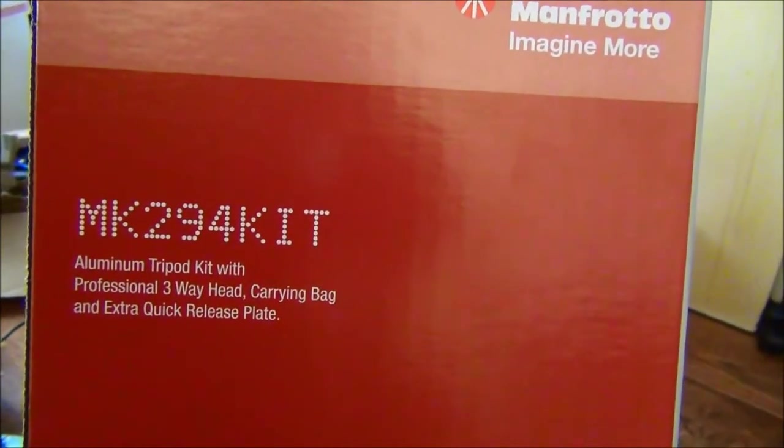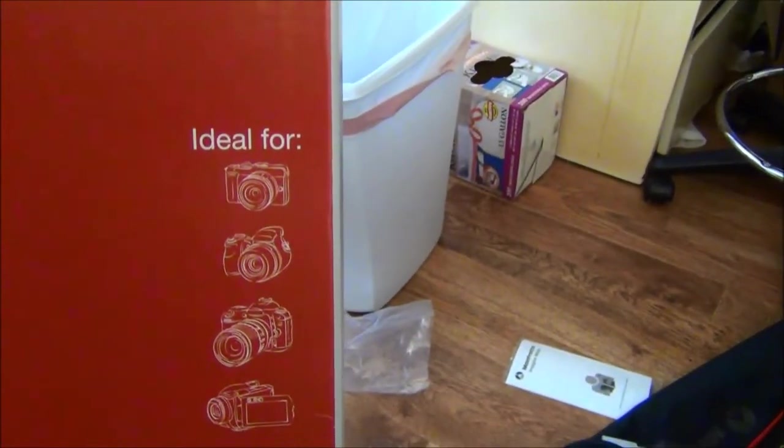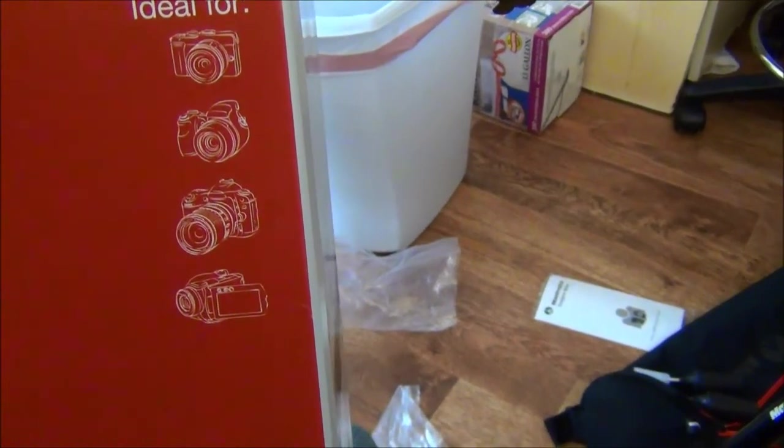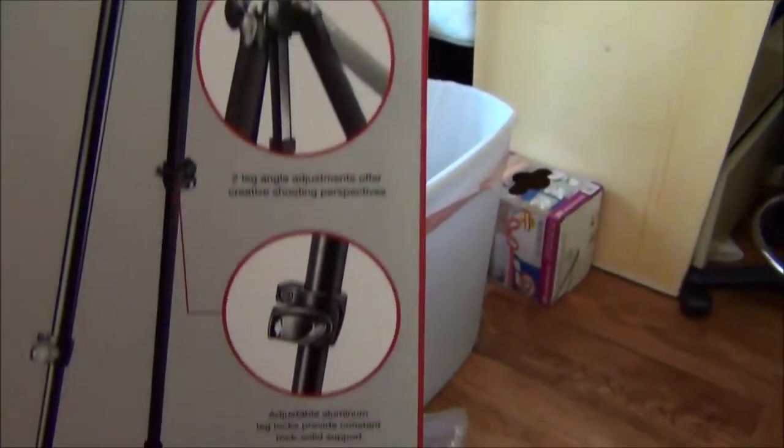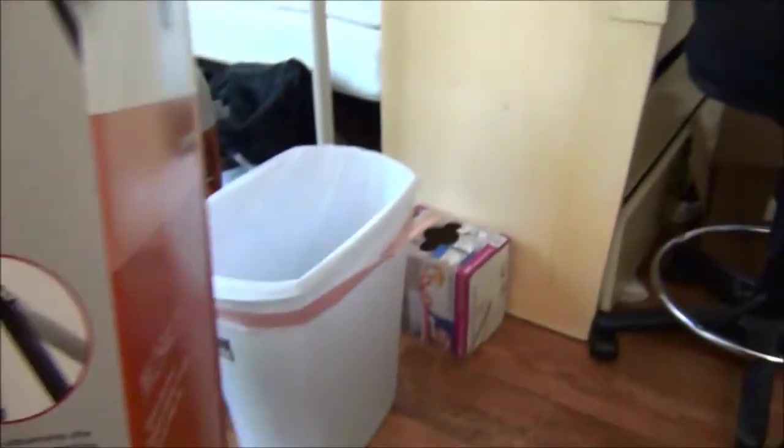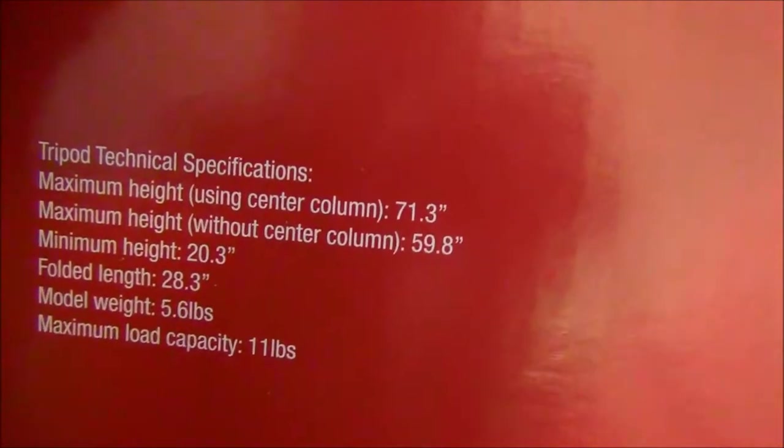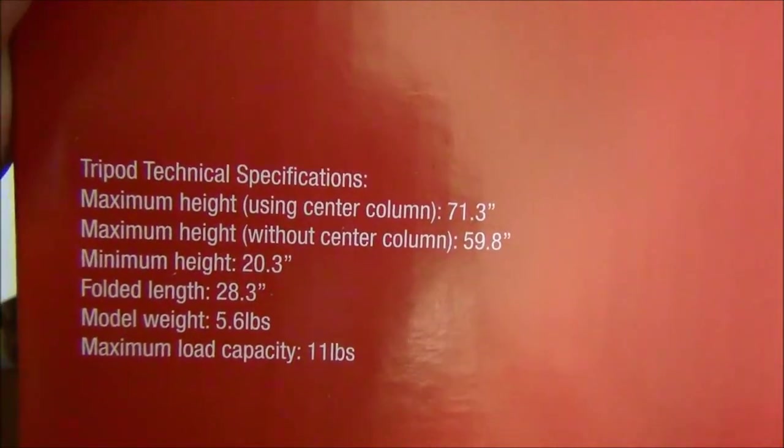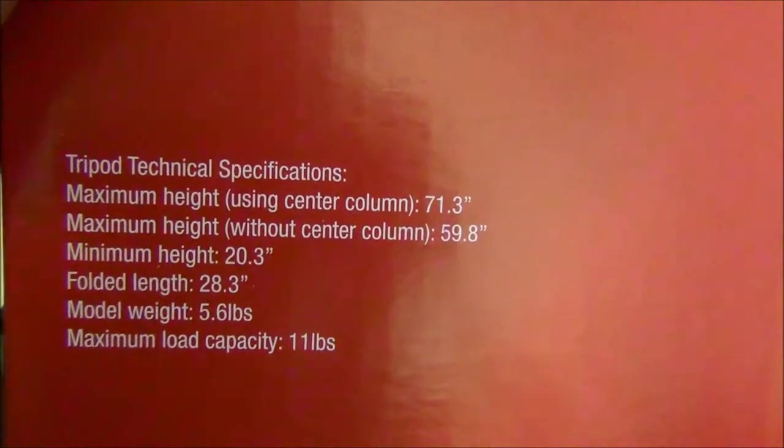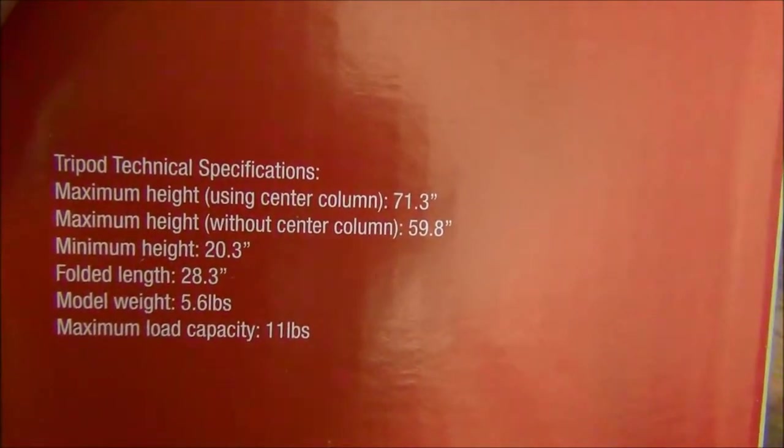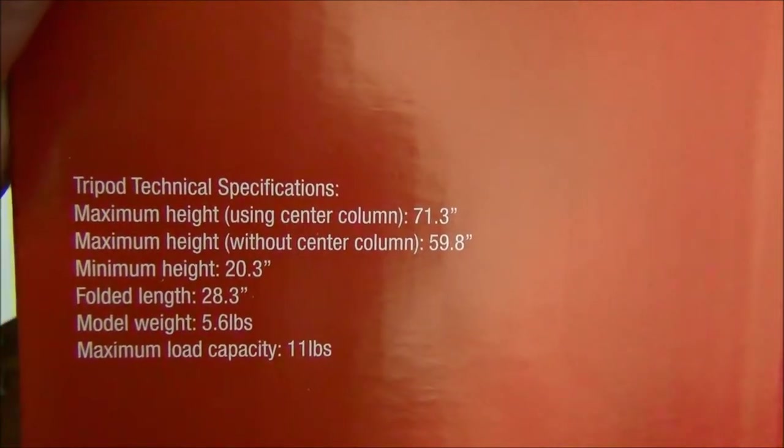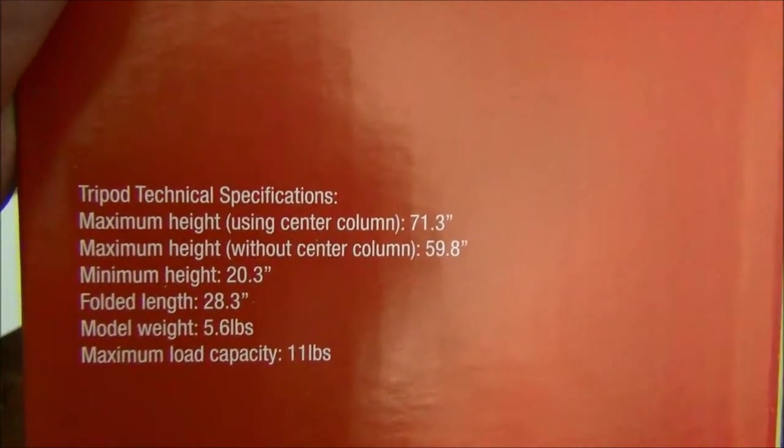This is a MK294KIT aluminum tripod kit with professional three-way head. It's ideal for professional camera and video camcorder. I'm not gonna read the manual, so I'm just gonna look at the box. I don't like manuals. So the specs are maximum height is 71.3 inches. I think that might be taller than me. Yeah, it's taller than me. And maximum height without center column. Well, you can read this. It weighs about 6 pounds. It can carry up to 11 pounds of weight.